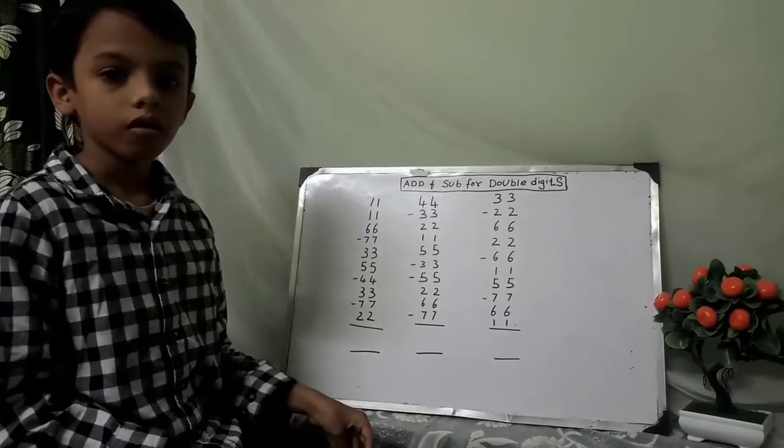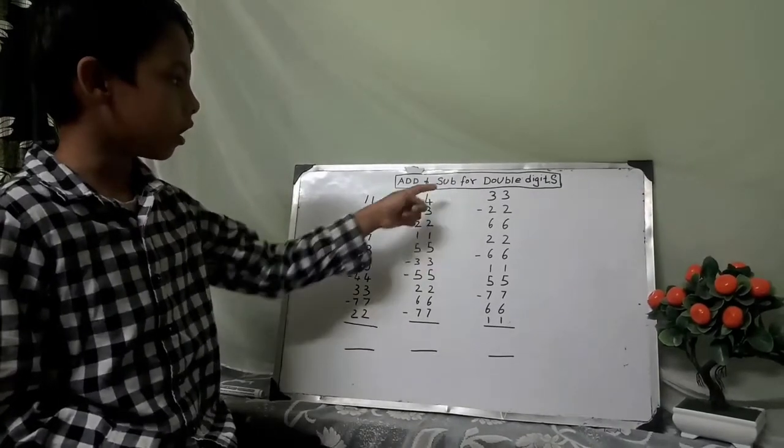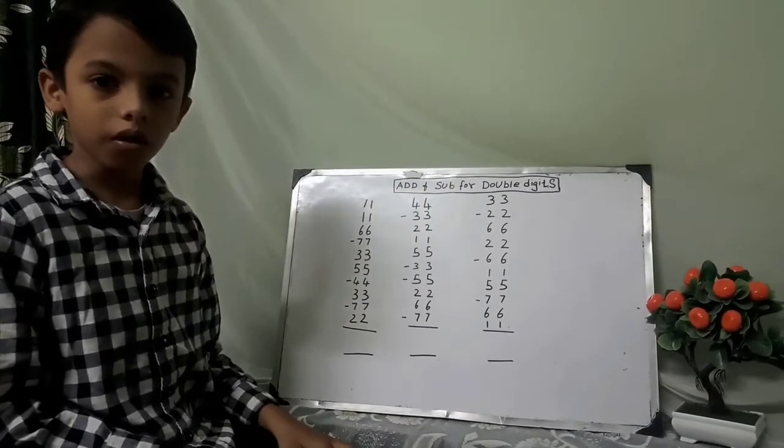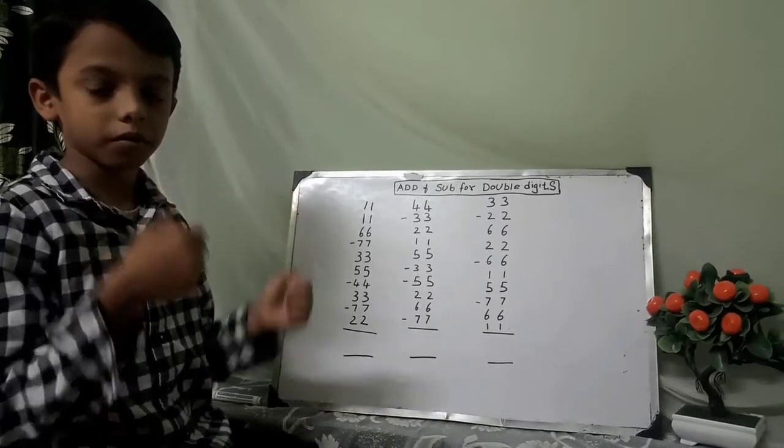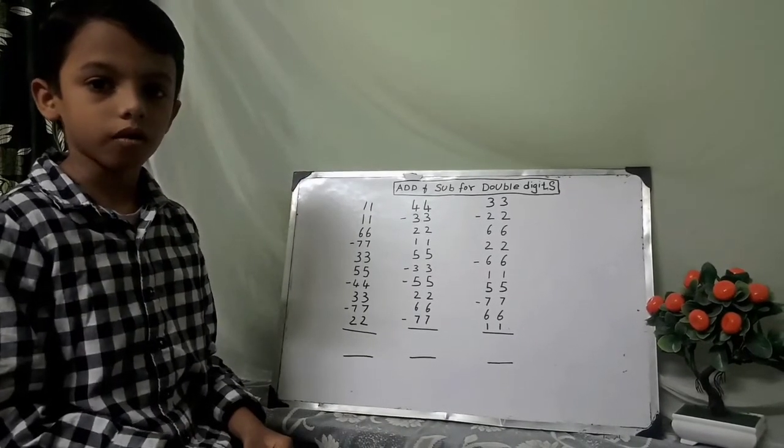Now let's do four double digits without formula. This is the ones place and this is the tens place. Now let's do the problem.